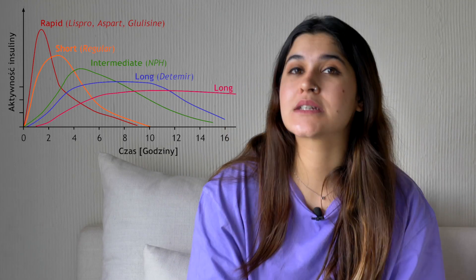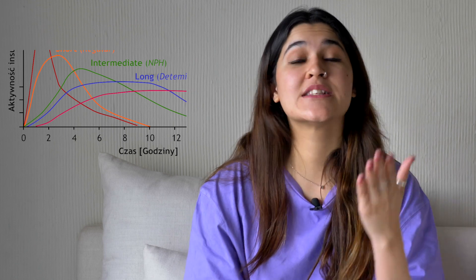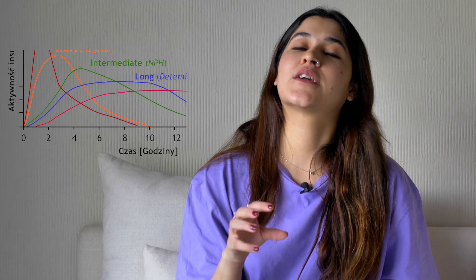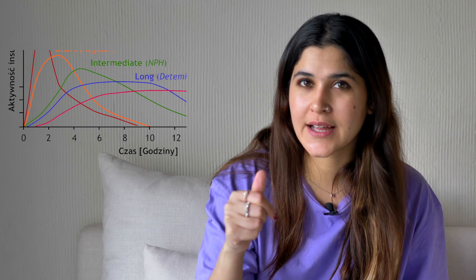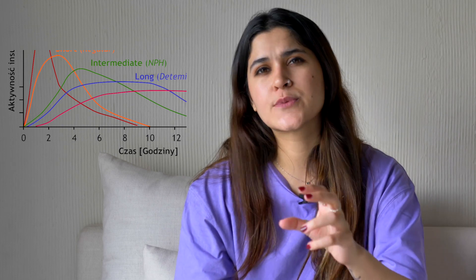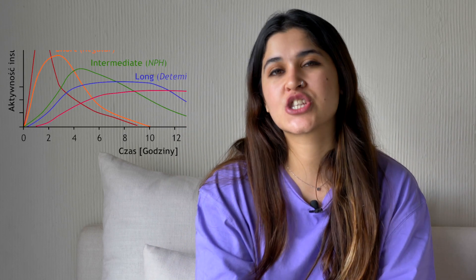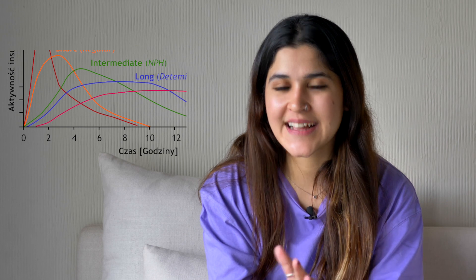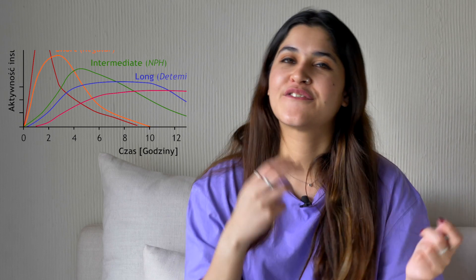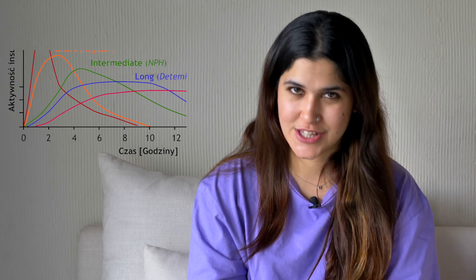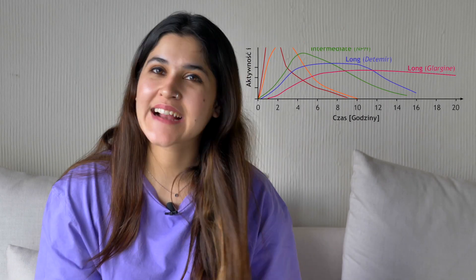Next we have intermediate acting insulin, also called NPH. This molecule has an extra protamine added, which slows down insulin absorption considerably. The peak of NPH comes almost 4 hours after injection and it stays active for about 12 hours, so half a day can be covered by NPH. But again there are limitations — flexible dosing and flexible eating do become a problem with NPH insulin.